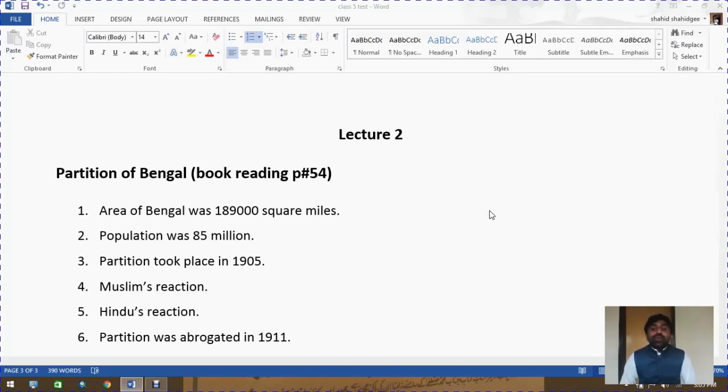Having succumbed to Hindu pressure, the British government had no other option but to declare its reversal in 1911. So the partition which was put into effect in 1905 was annulled in 1911.